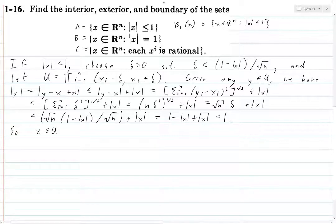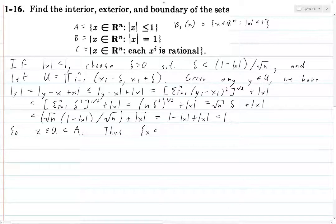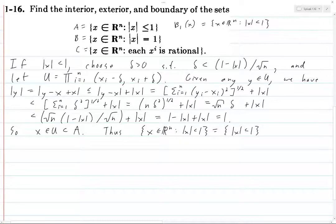So x is in U and U is contained in A. This technically shows us that the set of all points in ℝⁿ with norm less than one is contained in the interior of A. We haven't yet proven that every interior point has norm less than one, but we'll establish that through a process of elimination.